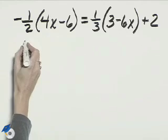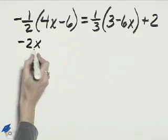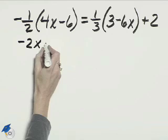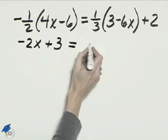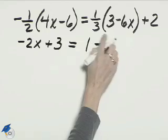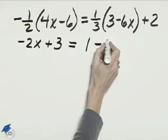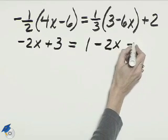Negative one-half times 4x is negative 2x. Negative one-half times negative 6 is positive 3. On the right-hand side, one-third times 3 is 1 minus one-third times negative 6x is negative 2x plus 2.